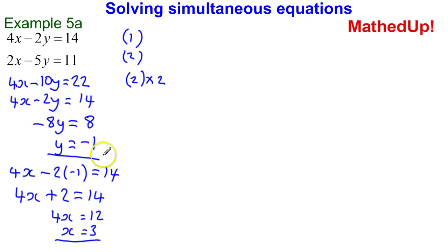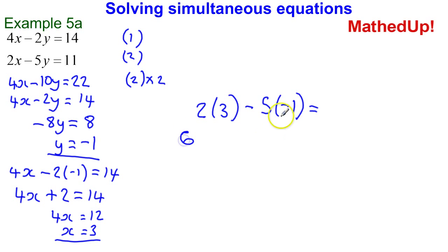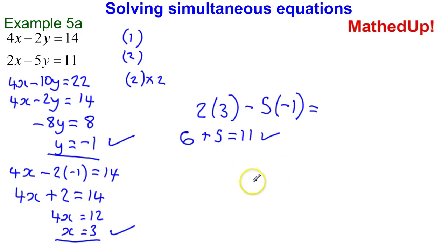So x is 3 and y is negative 1. Because I used the top equation to find x, I'm now going to substitute into the second equation to check. So 2 times 3 take away 5 times negative 1: that's 6 take away negative 5, which is the same as plus 5. 6 plus 5 gives us 11, which is what we're expecting. So x = 3 and y = -1 are our solutions.